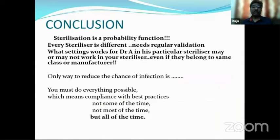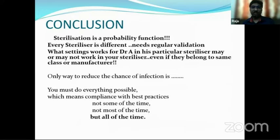In conclusion, sterilization is a probability function. We need to do everything possible so that we comply with best practices — not some of the time, not most of the time, but all the time — to achieve effective sterilization. Thank you. The next part, after you cook something, is to taste it — to know whether it was cooked correctly. That is what Dr. Sumit Kanduja will be telling us, to know whether your autoclave has gone through the correct process and whether it is safe to use.